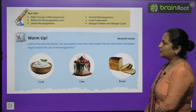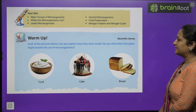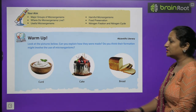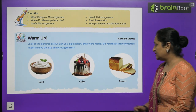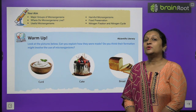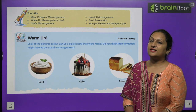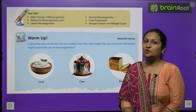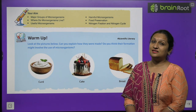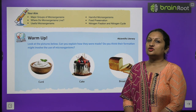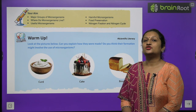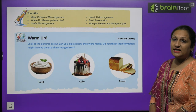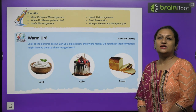Look at the picture below. Can you explain how they were made? Do you think their formation might involve the use of microorganisms? If we talk about curd, cake or bread — in all these, microorganisms are used for their manufacture. Curd uses useful bacteria called lactobacillus for the formation of lactic acid, which is why curd is a little sour. Similarly, cake and bread also need yeast to rise.